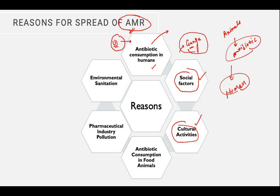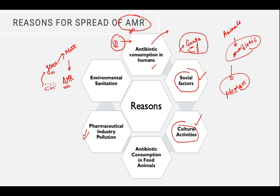Secondly, the pollution from pharmaceutical industries - in and around those industries - also causes the spread of AMR. The environmental conditions being created by this industrial pollution and sanitation problems cause small bacteria and microorganisms to develop. After developing, it is generally seen that their genes are getting mutated, and if their genes are getting mutated, they will be developing antimicrobial resistance, which will be a very, very problematic thing.